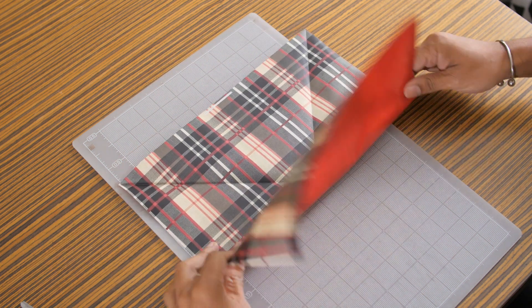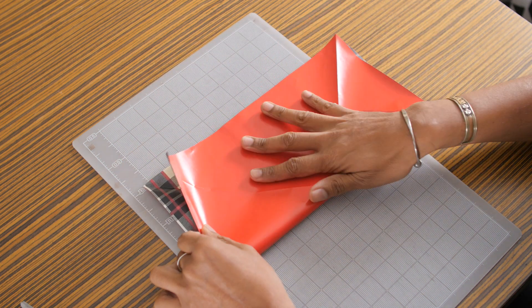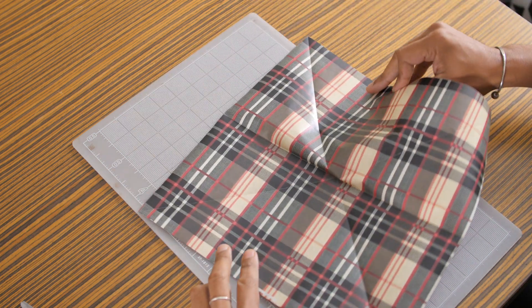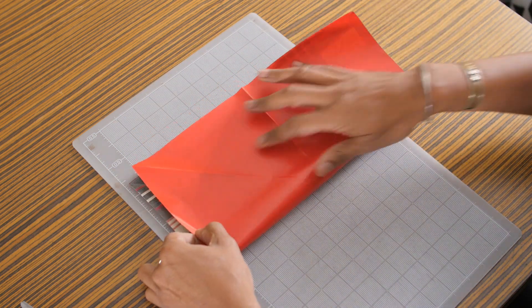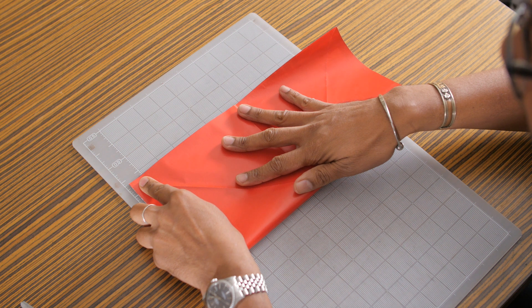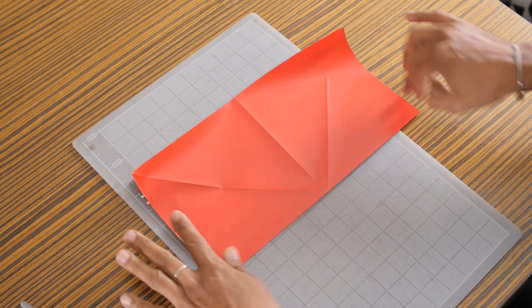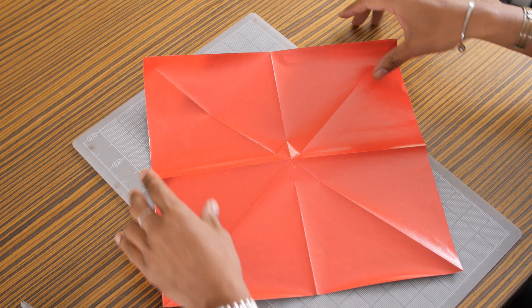Then open it up and fold it lengthwise. Open it up again and fold it in the opposite direction lengthwise and then finish off your creases. And when you open it up it should look just like this.